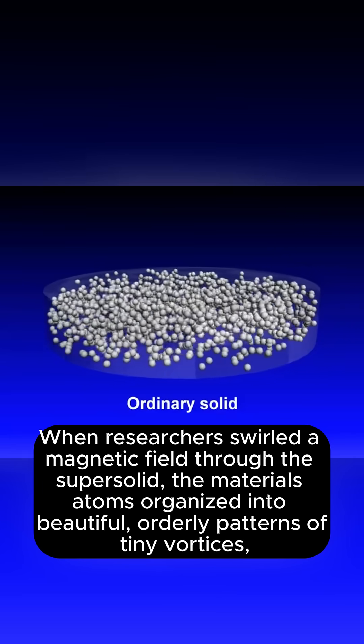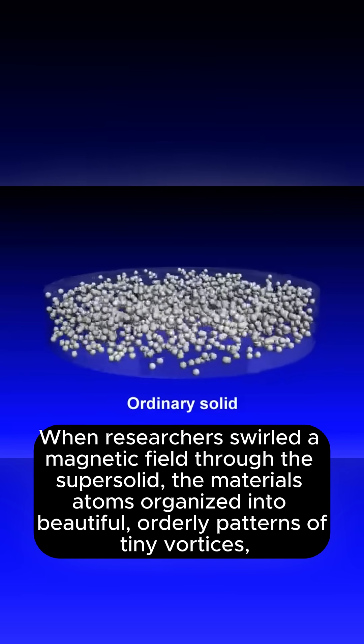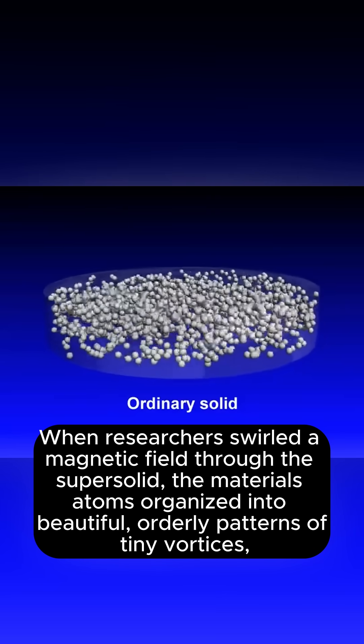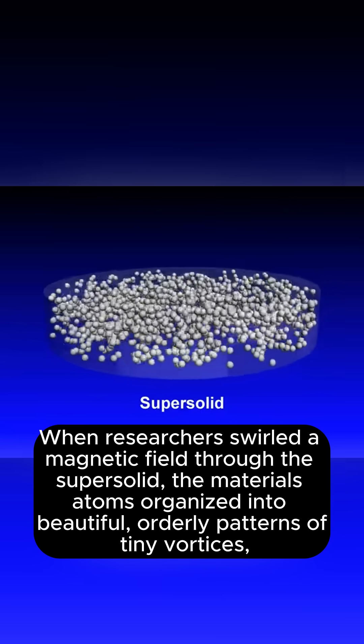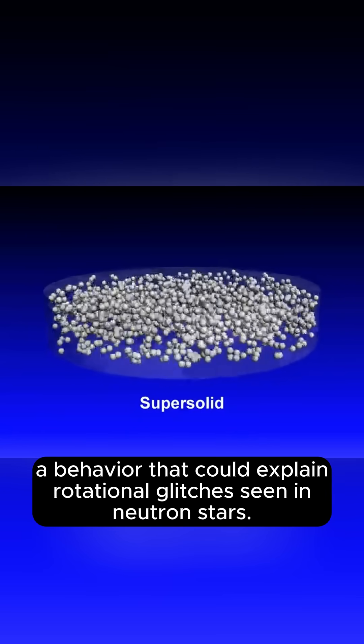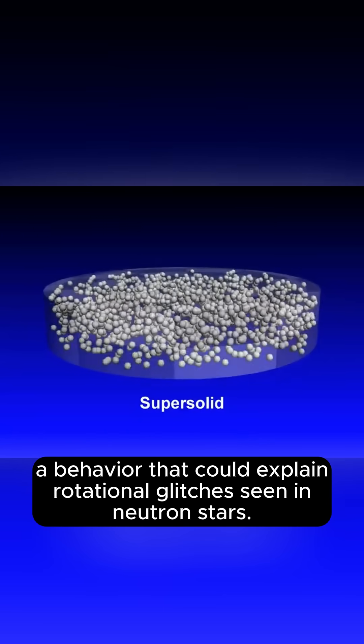When researchers swirled a magnetic field through the supersolid, the material's atoms organized into beautiful, orderly patterns of tiny vortices, a behavior that could explain rotational glitches seen in neutron stars.